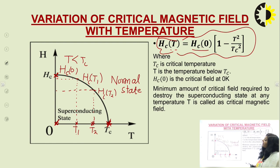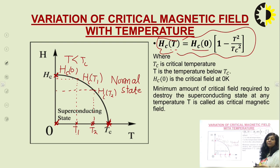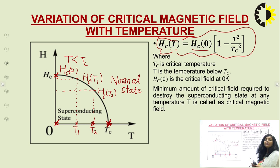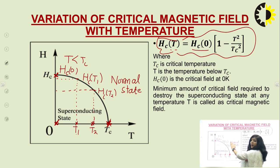To summarize: a material with superconducting potential shows superconductivity only at temperature less than Tc. Below critical temperature, the state of the material is decided by both temperature and magnetic field. The region within the Hc vs T curve corresponds to the superconducting state, while beyond this curve — even if temperature is below critical temperature — the material will be in the normal conducting state.